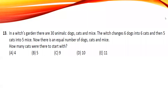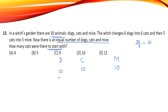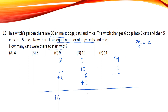In a witch's garden there are 30 animals: dogs, cats, and mice in equal numbers, so 10 of each. A witch changes six dogs into cats, so cats gain six and dogs lose six. Then she changes five cats into mice, so cats lose five and mice gain five. The final number of cats is 10 + 6 − 5 = 9... wait, cats will be 9.